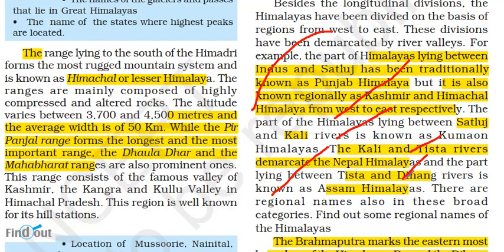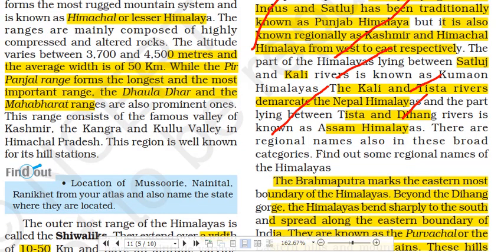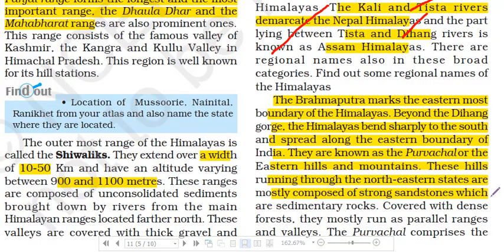The Dihang River marks the boundary of the Assam Himalayas. The Brahmaputra forms the easternmost boundary of the Himalayas. Beyond the Dihang Gorge, the Himalayas bend sharply southward and spread along the eastern boundary of India, forming the northern and eastern hills. These hills run through the northeastern states and are mostly composed of sandstone sedimentary rocks.